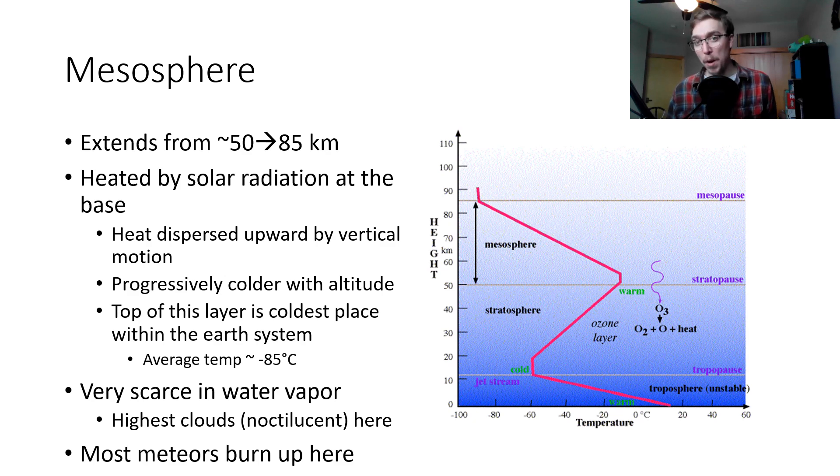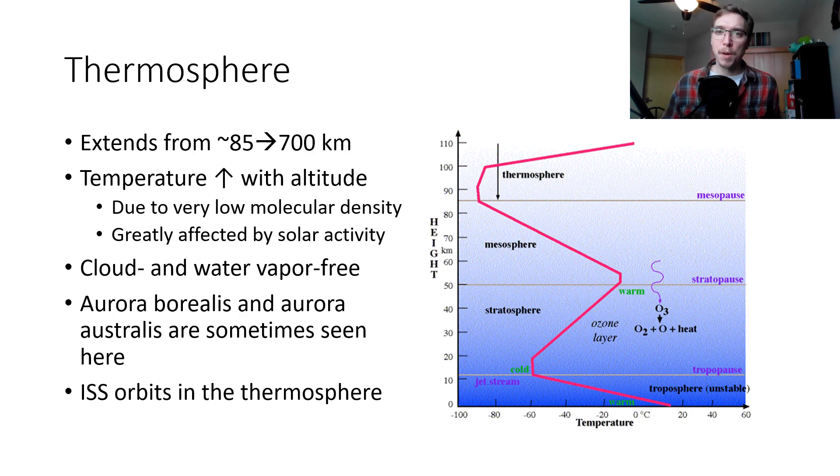And finally, the last one we're talking about is the thermosphere. This extends from you could say 85 kilometers to 700 kilometers. There is no top to the atmosphere, it's kind of a diffuse boundary. There's no real top. You don't go to 701 kilometers and you're in outer space, that's not how it works. But in the thermosphere, temperature increases with altitude due to very low molecular density. This is incredibly affected by solar activity, hence the wide variability in temperatures within the thermosphere. It is cloud and water vapor free. Sometimes you'll see the aurora borealis or aurora australis are sometimes seen within the thermosphere, and the International Space Station orbits within the thermosphere, just to give you some context of where we're at.